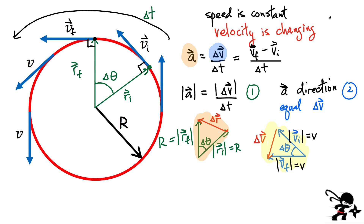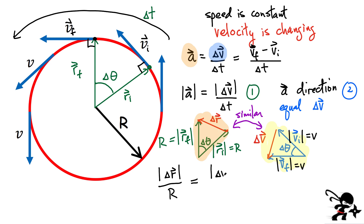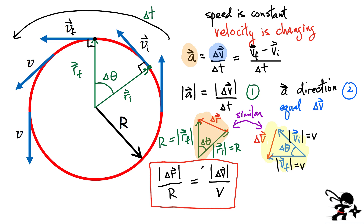Since we have two similar triangles, the ratios of their sides must be the same. We can write: the ratio of the opposite side — the change in r — divided by any one of those sides r, must equal the change in velocity divided by the speed v. This relationship is really the keystone to proving the magnitude of the centripetal acceleration. The magnitude of acceleration equals delta v over delta t.